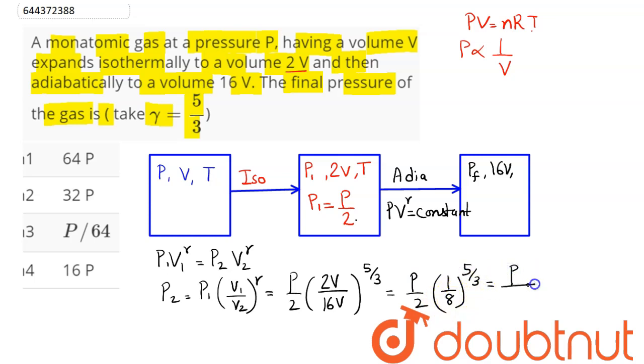So here 3 cancels out. This comes as P divided by 2 into 2 power 5, that is P divided by 2 power 6 which is 64. Hence P by 64 is the final pressure which is option number 3. So 3 is the correct answer.